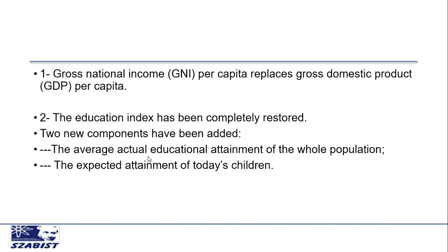The first change made in the new HDI is that in the old HDI they used GDP as national income, but in the new HDI they have used Gross National Income, or GNI, for the measurement of national income. So in the old HDI they used GDP for the income index, and in the new HDI they have used GNI as the measurement of the income index.